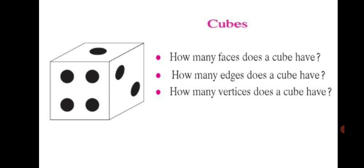How many faces does a cube have? Just like a cuboid, a cube also has 6 faces: one top face, a bottom face and 4 faces at the sides. How many edges? 4 edges on top, 4 at the bottom and 4 at the sides, so 12 edges. And a cube also has 4 vertices on top and 4 at the bottom, so we can say a cube has 6 faces, 12 edges and 8 vertices.